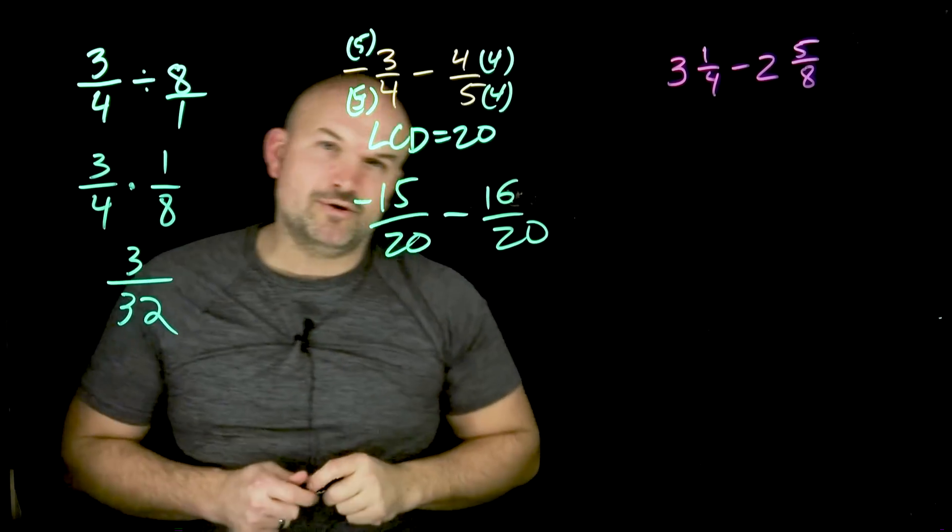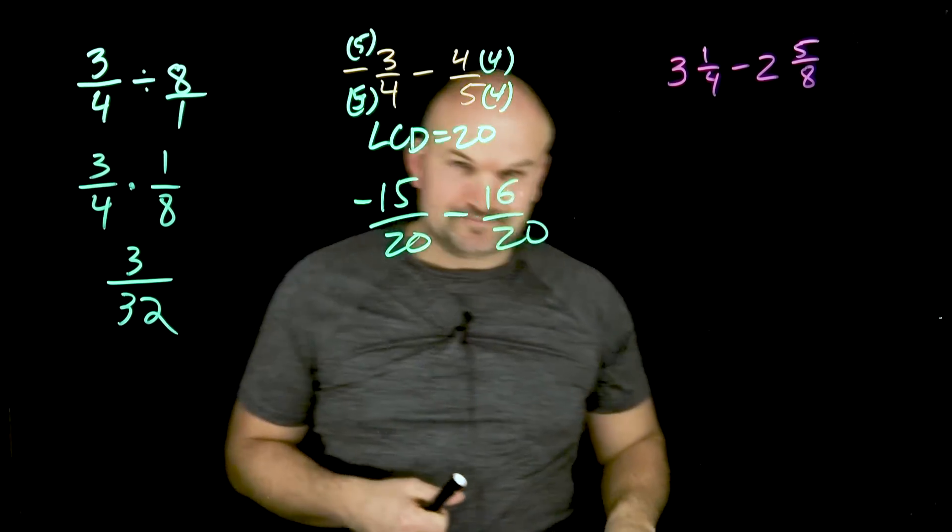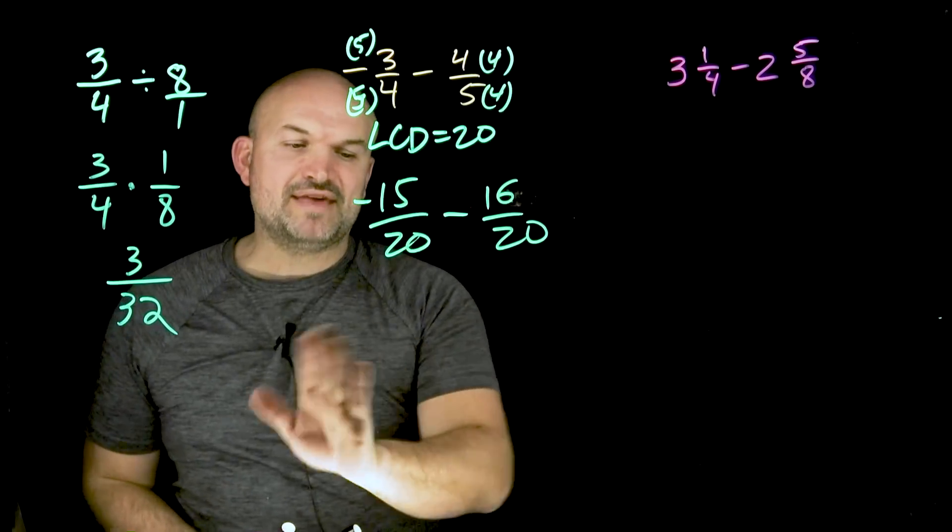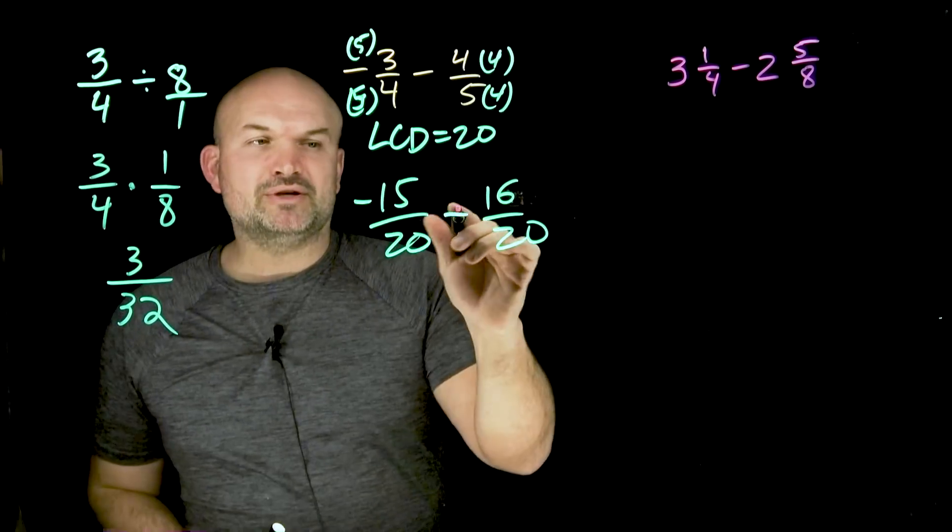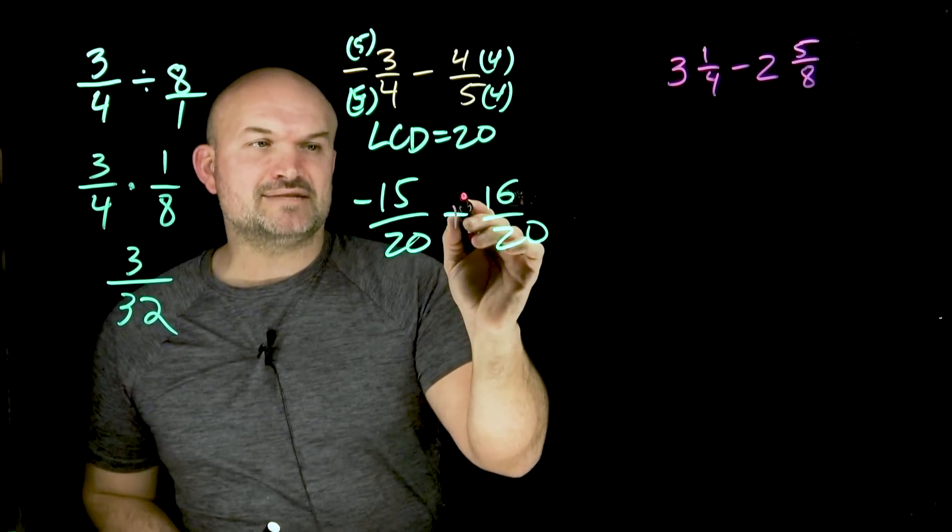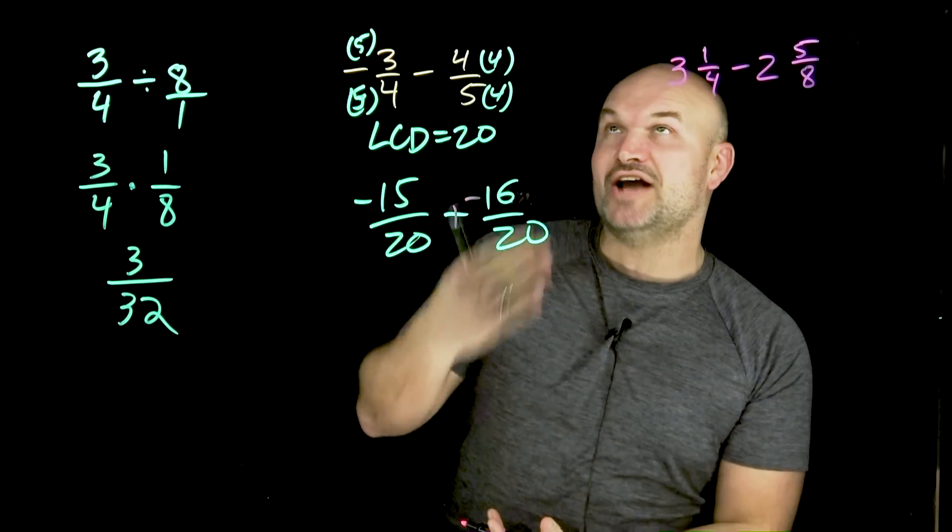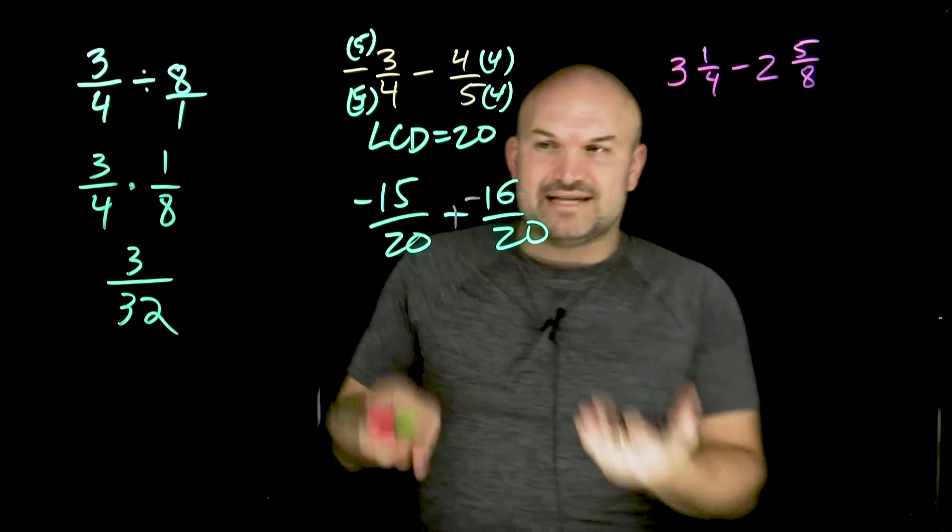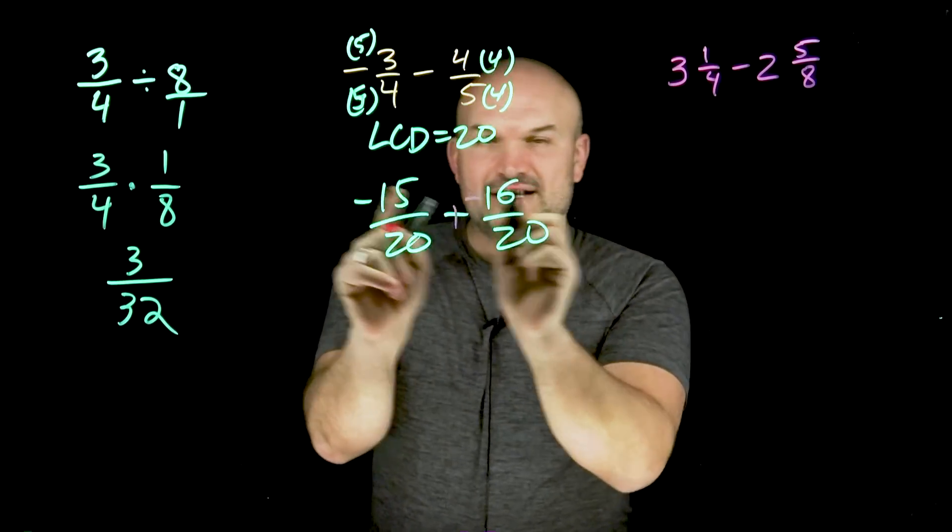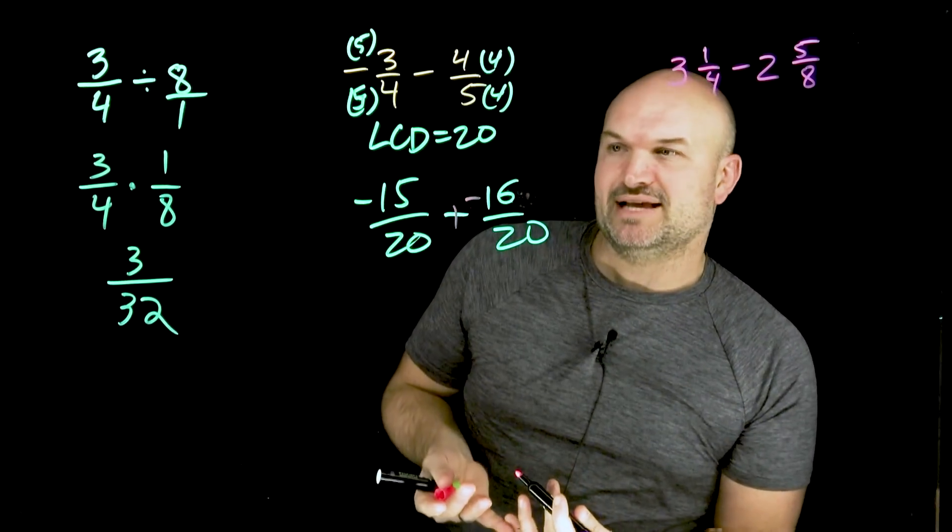All right, now what do we do about this negative and subtraction? So the best way I always like to think about this, and again, this is for a little bit more older grades. Remember, you can always rewrite subtraction as plus a negative, right? So now you can see I have a negative number plus another negative number, which simply means I'm just going to be combining my two numerators together. It's just going to be a negative number at the end.